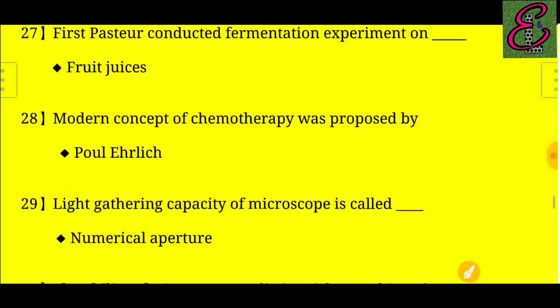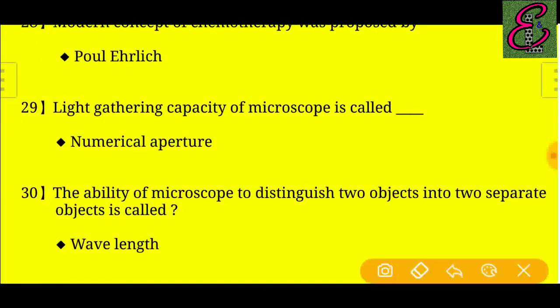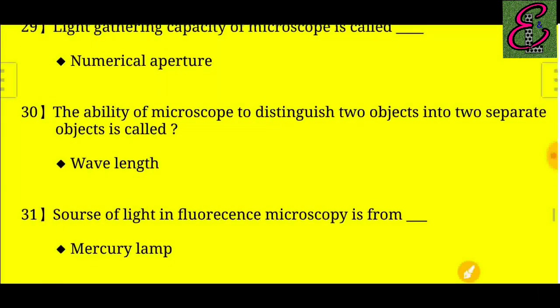Question number twenty-nine: Light gathering capacity of a microscope is called numerical aperture.